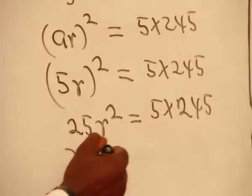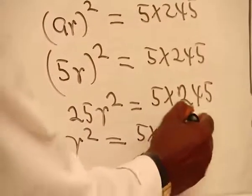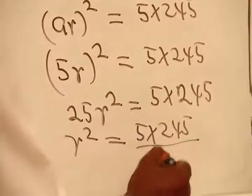Therefore, our r squared will be 5 times 245 all over 25.